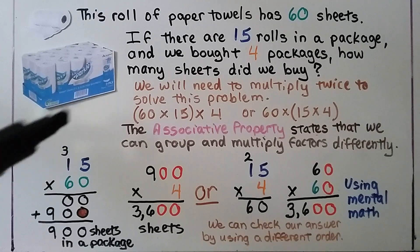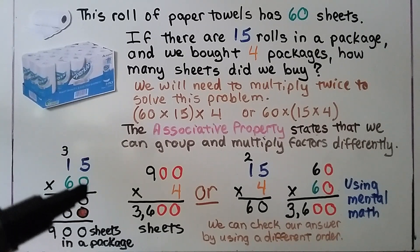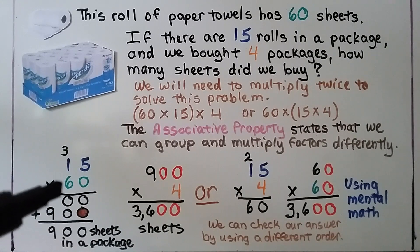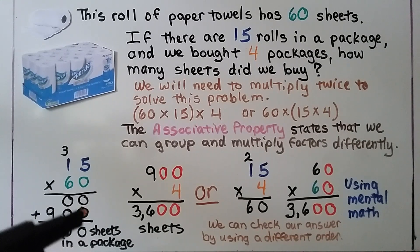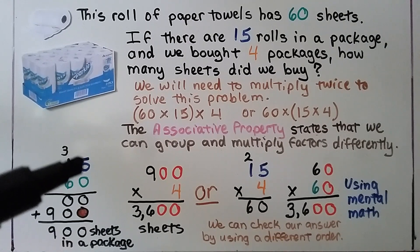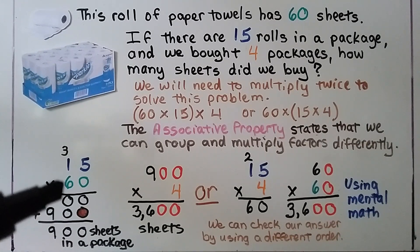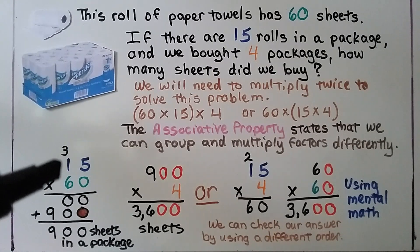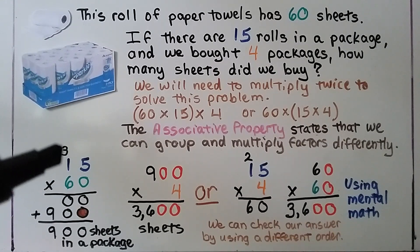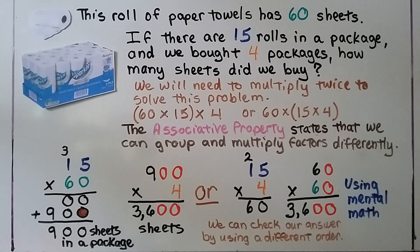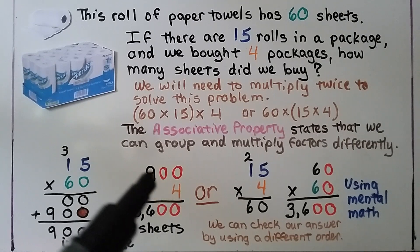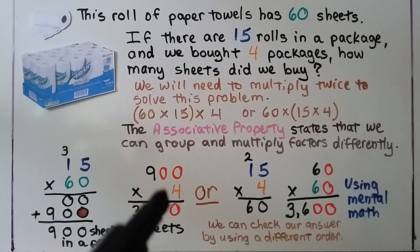If we do 60 times 15: 0 times 5 is 0, and 0 times 1 is 0 — the ones row is always 0. Then 6 tens times 5 is 30 tens; we regroup 3 and put the 0 down. Then 6 tens times 1 ten is 6 tens, plus 3 is 9 tens. We have 900 sheets in a package. Since we bought 4 packages, we multiply 900 times 4. The basic fact 4 times 9 is 36, and with two zeros in the factor, there are two zeros in the product — that's 3,600 sheets.